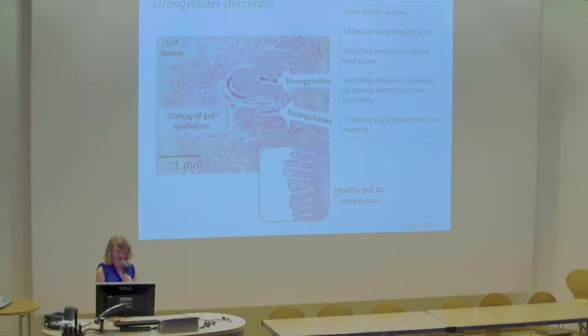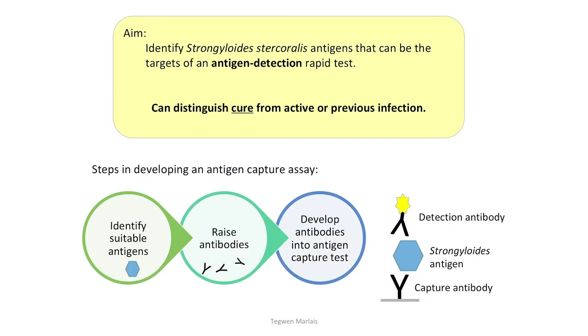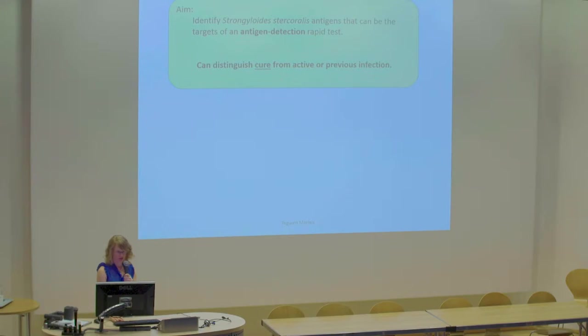That's been a major focus of my search for antigens. My aim was to identify Strongyloides stercoralis antigens that can be the targets of an antigen-detecting rapid test, and as we've heard, the advantage of this kind of test is that it can distinguish cure from active and previous infection, which is very important to ensure that someone is cured after treatment.